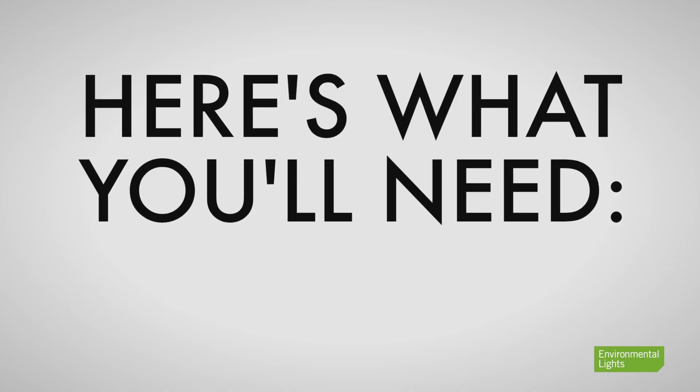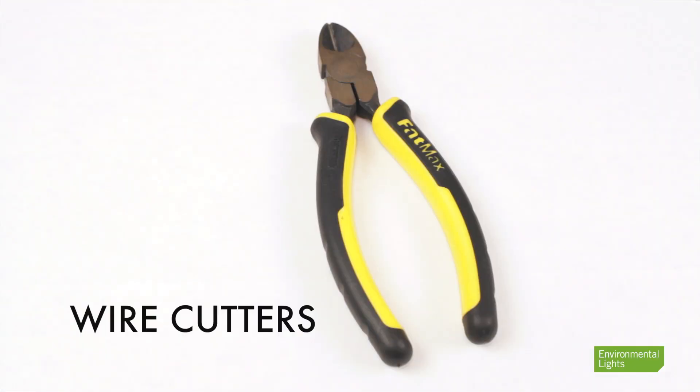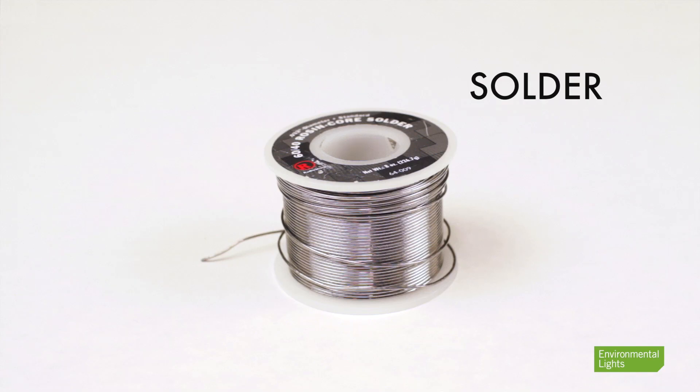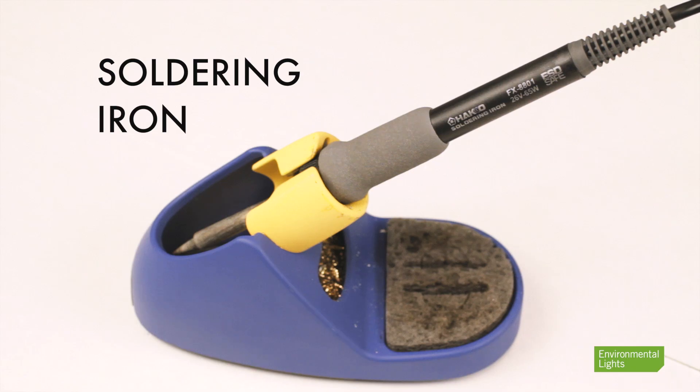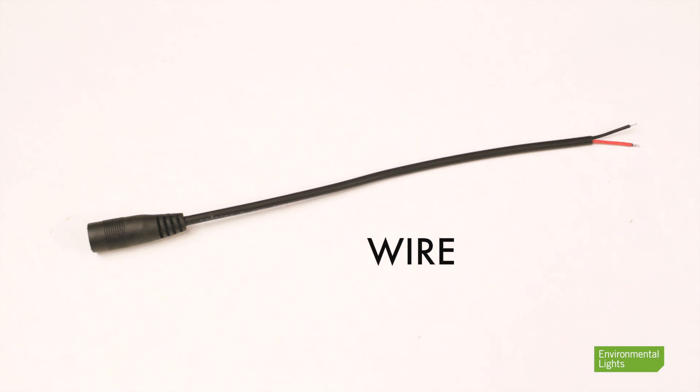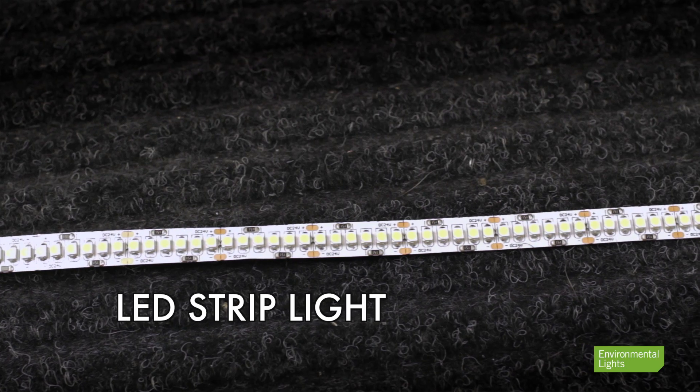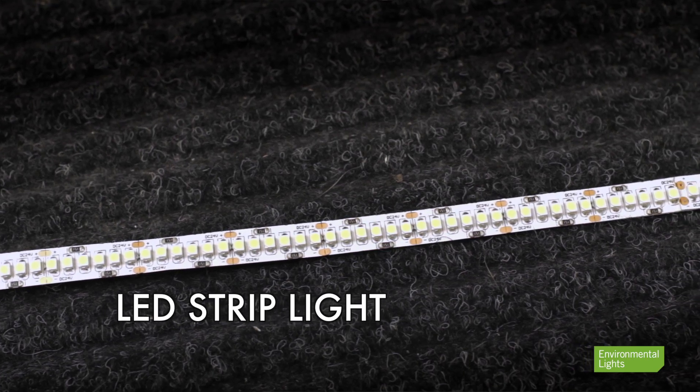To solder LED strip lights, you'll need a pair of wire cutters, solder, a soldering iron, the wire that you are going to attach to the strip, and of course LED strip light from Environmental Lights.